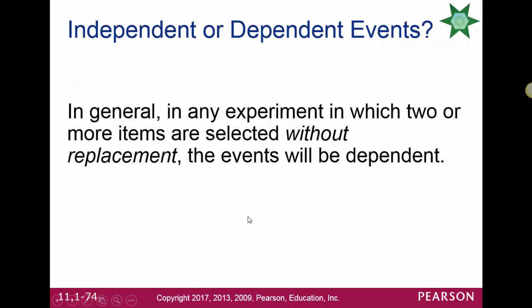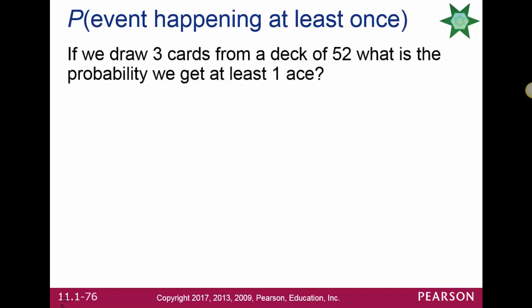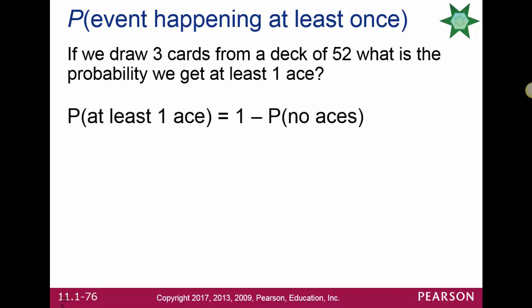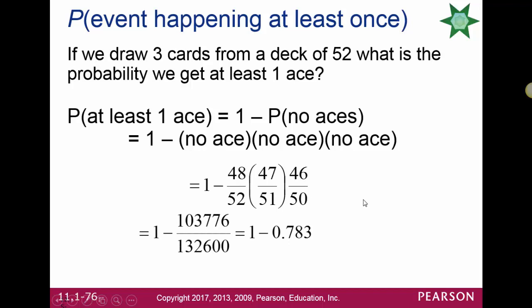In general, any experiment in which two or more items are selected without replacement will produce dependent events. The probability of an event occurring at least once equals 1 minus the probability that the event does not happen — this is the complement rule. If we draw three cards from a deck of 52, the probability of getting at least one ace is 1 minus the probability of no aces: (48/52) × (47/51) × (46/50). Simplifying gives approximately 0.217, so there is a little more than a 21% chance.